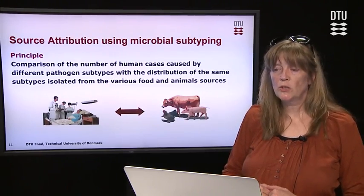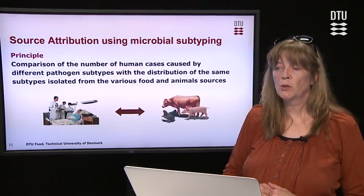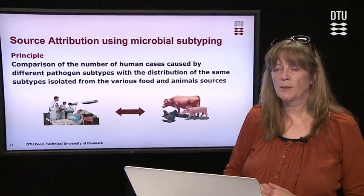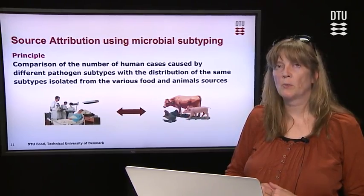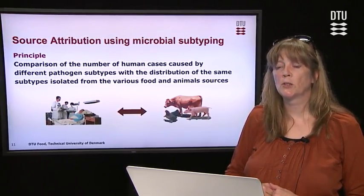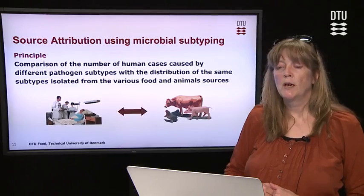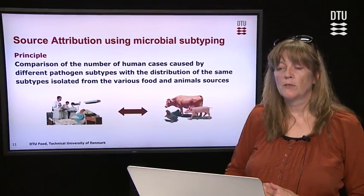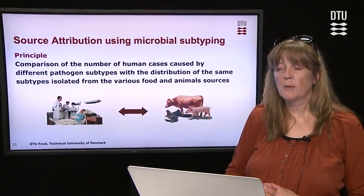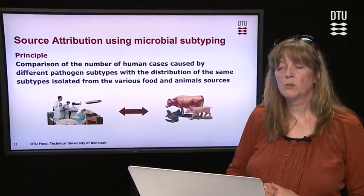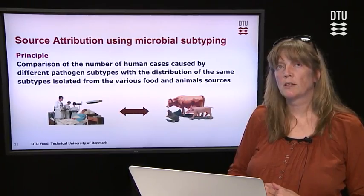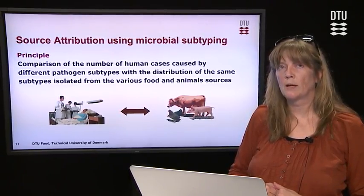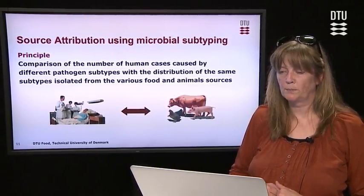Source attribution using microbial subtyping is really about comparing the number of human cases with particular subtypes of a pathogen with the distribution of the same subtypes isolated from animals and food.